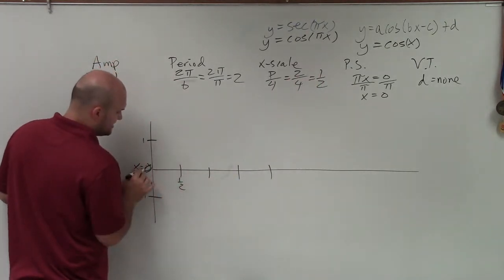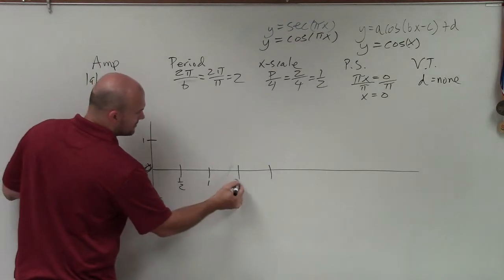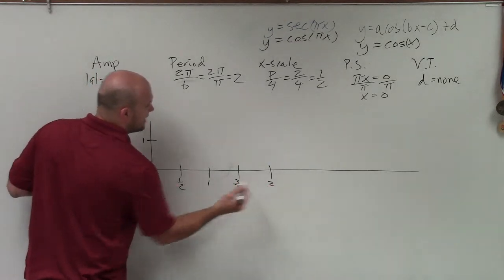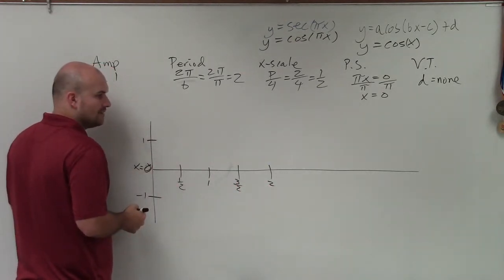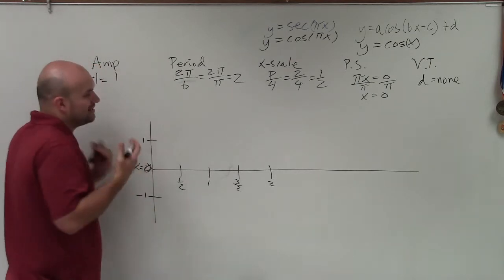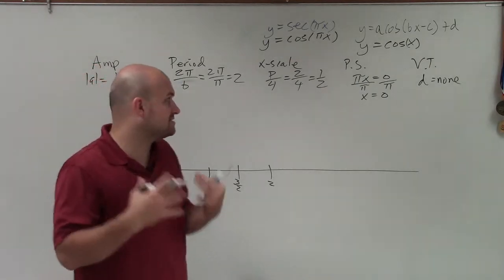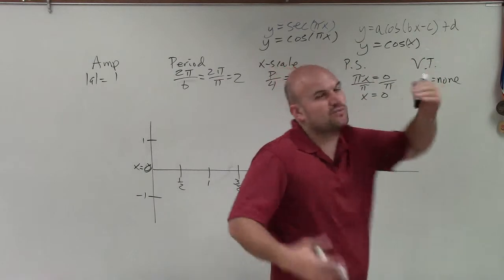So if that's 0, that's 1 half, that's 1, that's 3 halves, and that's 2. OK. Now, again, looking at the parent graph, this would be very important for you to understand what is just y of cosine of x. We know that the parent graph at 0, we start at the maximum.